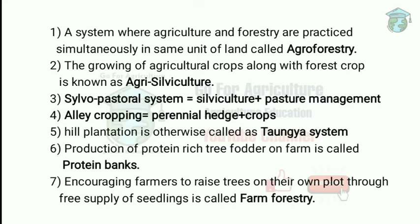Taungya means hill. In the taungya system, a combined stand of woody as well as agriculture species are grown in hills for the establishment of plantations. Next, production of protein-rich tree fodder on farm is called protein banks, where protein-rich trees with fodder are planted on the farm.